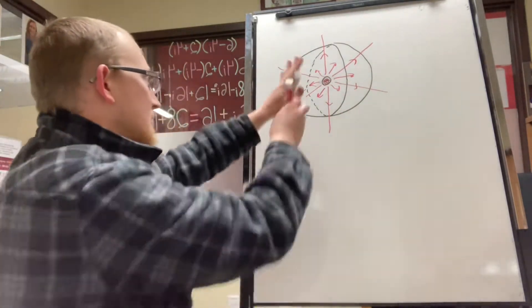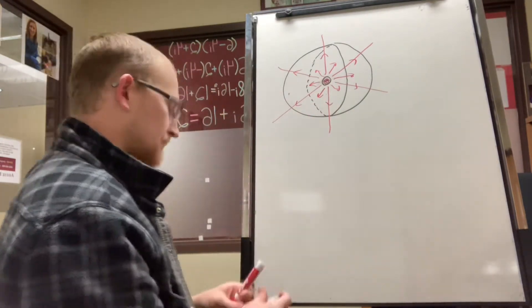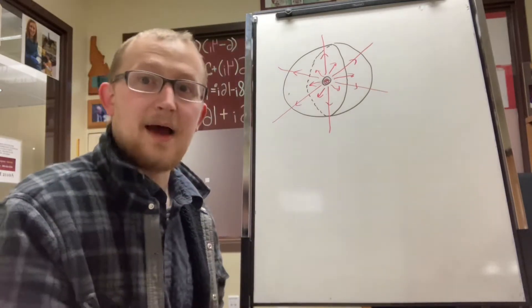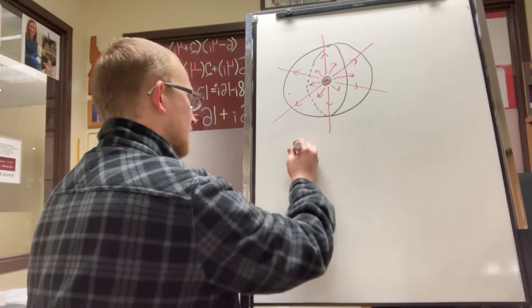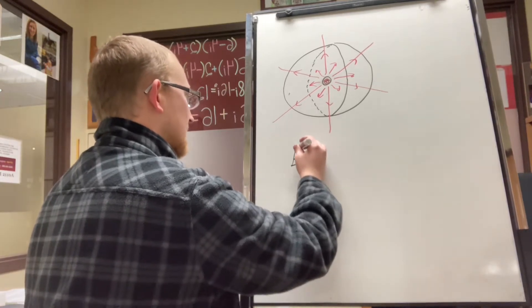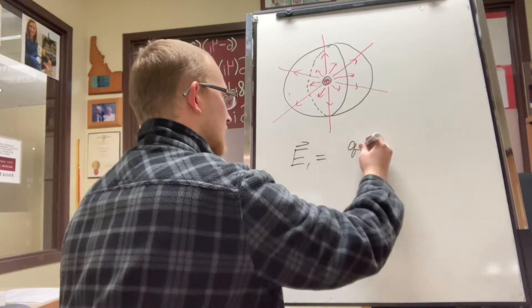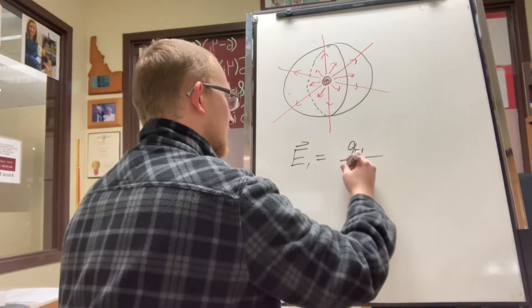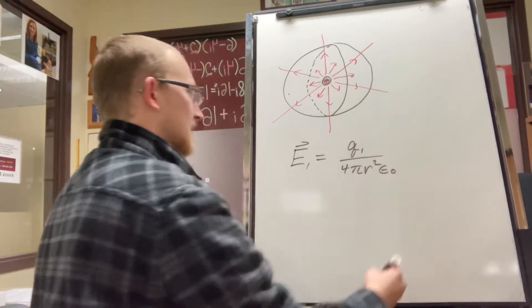So you're just imagining this sphere with all these electric field lines penetrating the surface. And so the amount of field lines, like I said last time, let's look at the equation for the electric field caused by this charge 1. If you'll remember, it's equal to the charge 1 divided by 4 pi r squared epsilon sub naught.